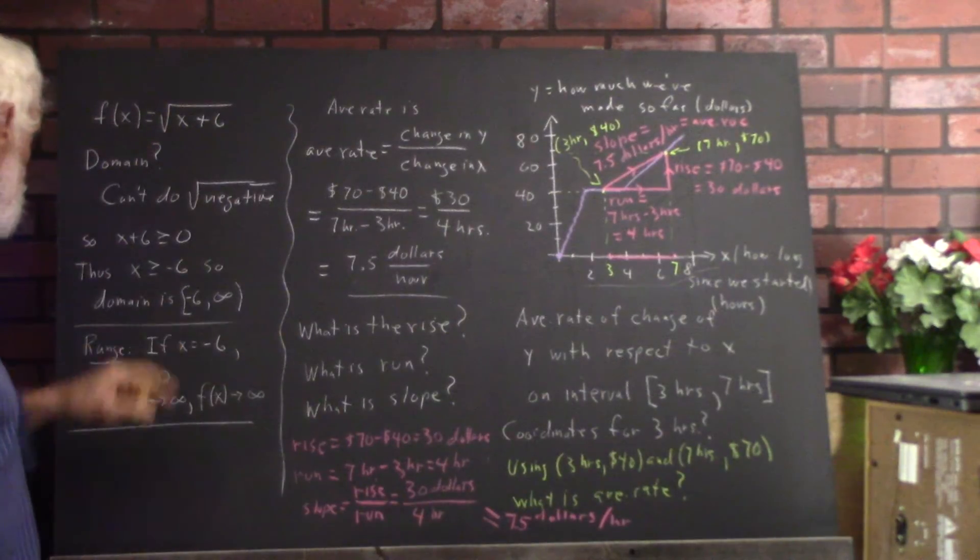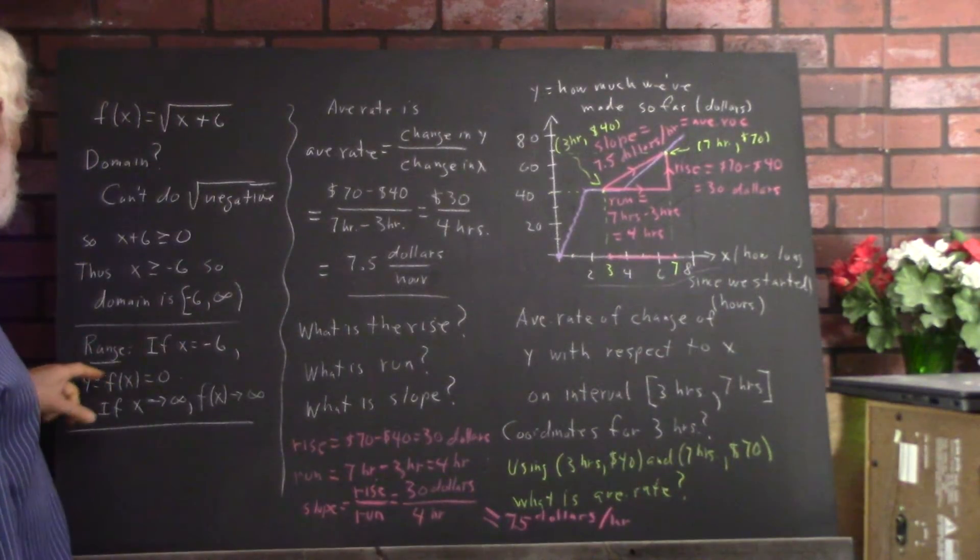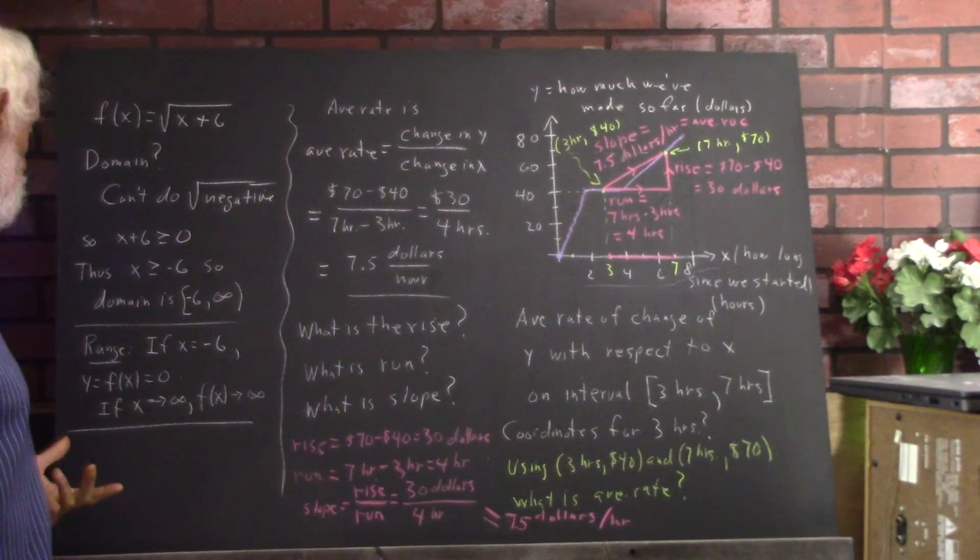The range, well, if x is negative 6, then y equals f of x equals 0.